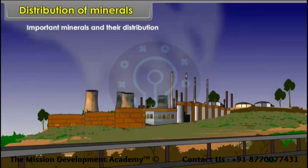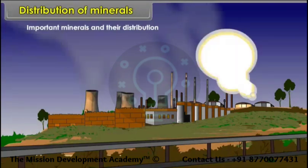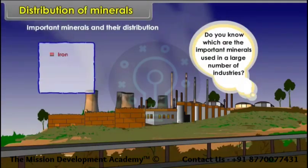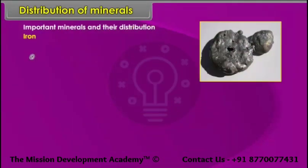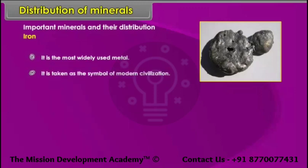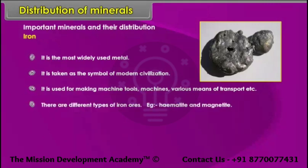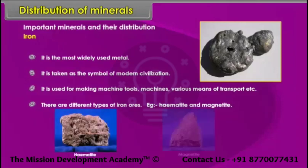Important minerals and their distribution: Iron ore, copper and bauxite are used in a large number of industries. Iron is the most widely used metal and is taken as the symbol of modern civilization. It is used for making machine tools, machines, various means of transport, etc. There are different types of iron ores, such as hematite and magnetite.